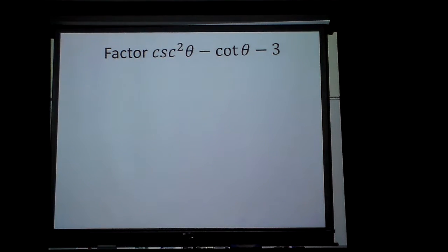I got a squared cosecant. Think about my Pythagorean identities. Cosecant squared theta is the same thing as one plus cotangent squared theta. So I can substitute: one plus cotangent squared theta minus cotangent theta minus three.